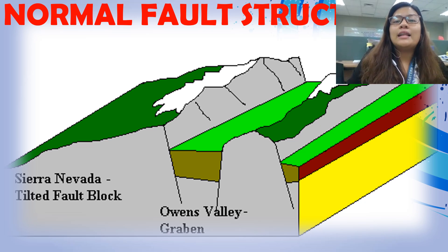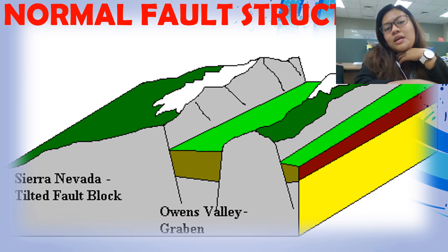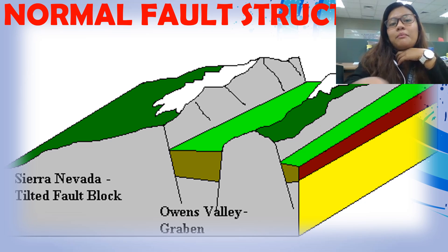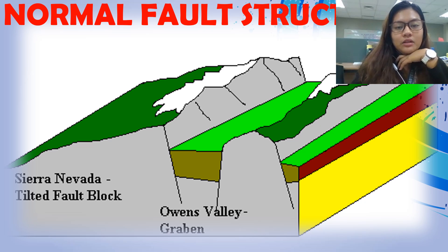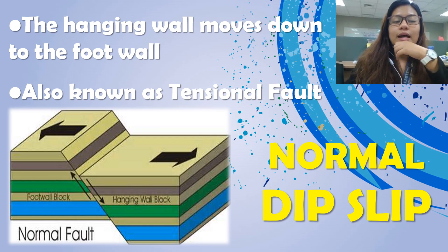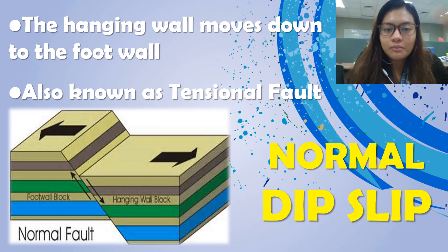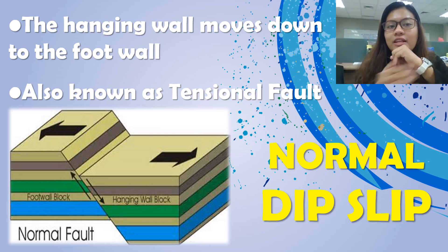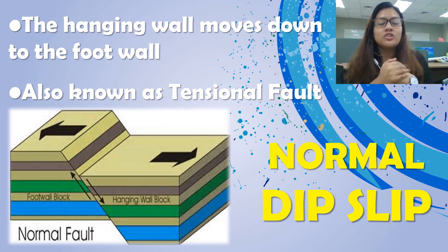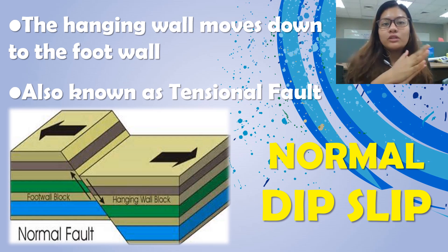Here's a short animation and a preview of Sierra Nevada, Owens Valley, and the mountain horsts, which can be a vivid example of normal fault. Normal fault can also be known as tensional fault. Do not be mistaken — we also have different kinds of stresses that involve tension, but normal dip-slip fault or tensional fault is different from that.